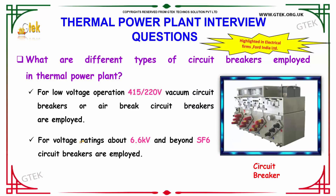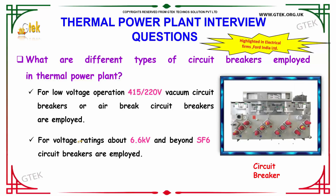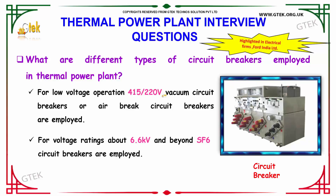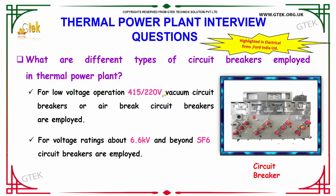What are the different types of circuit breakers employed in a thermal power plant? For low voltage operation in the power plant, 415–220V vacuum circuit breakers or air break circuit breakers are employed. For voltage ratings of 6.6kV and beyond, SF6 circuit breakers are employed.